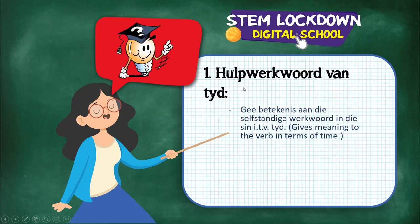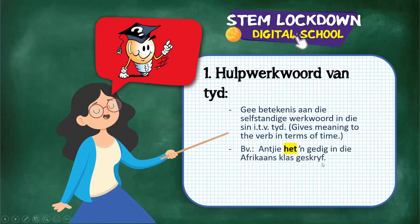A hulpwerkwoord van tyd gives meaning to the selfstandige werkwoord in terms of time. For example: 'Ainkie het a gedig in die Afrikaanse klas geskryf.' 'Geskryf' is my verb. I cannot say 'Ainkie a gedig in die Afrikaanse klas geskryf' — that verb needs help. 'Het' tells us about the time that 'geskryf' happened.